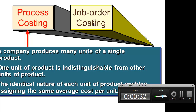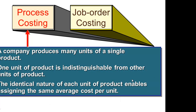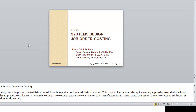There are two types of product costing systems. First, process costing. A company produces many units of a single product. One unit of a product is indistinguishable from another unit of the product — they are identical in nature, which enables the company to assign the same average cost per unit.